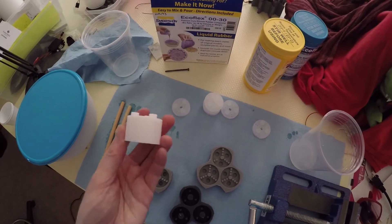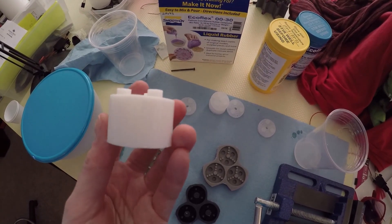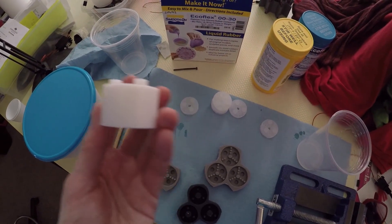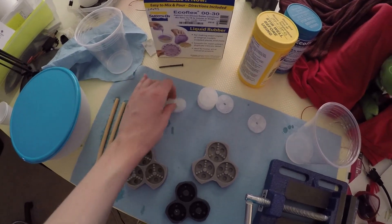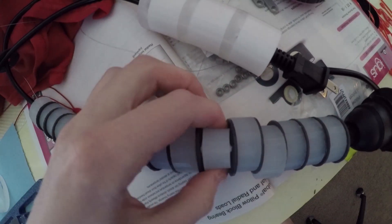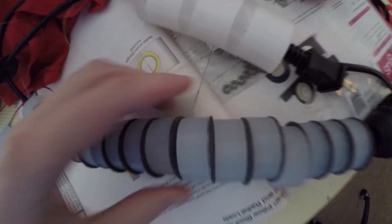One of the other things that I changed is the proportion of 3D printed disc to squishy silicone vertebrae. So before I had uber thick, beefy squishy vertebrae made of silicone.